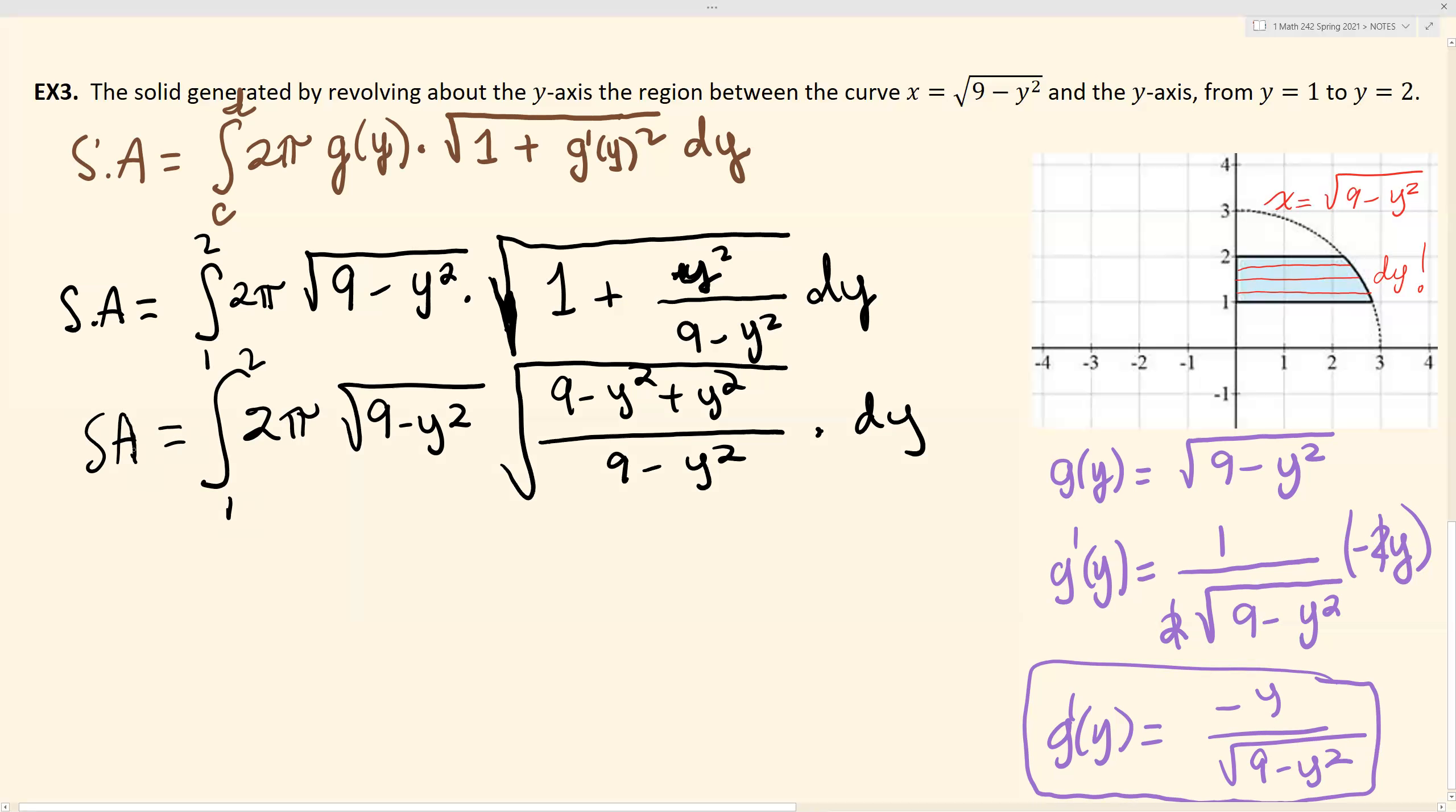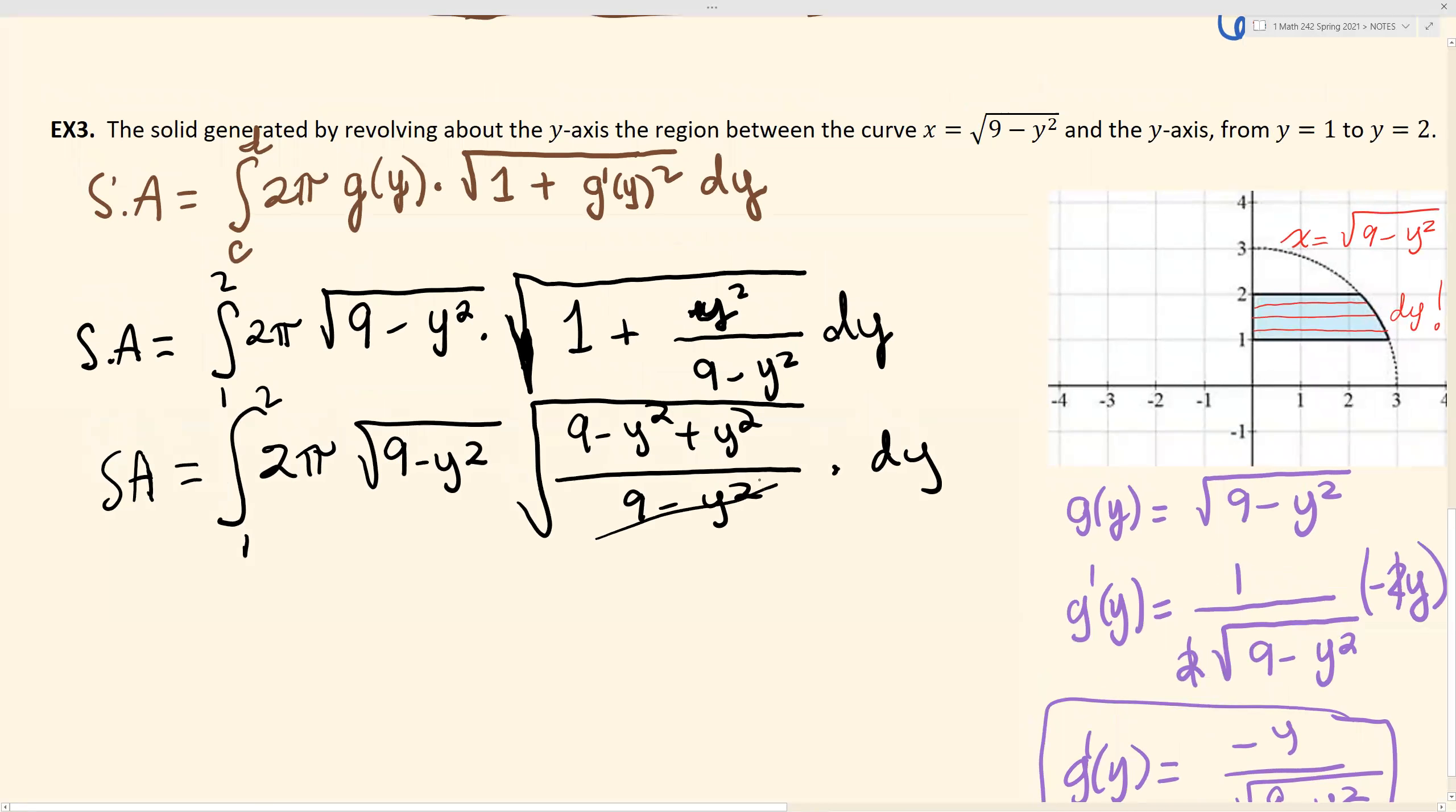So let's take a look here. We have square root of 9 minus y squared is going to cancel with that denominator down here, right? Because both of them are inside the square root. So this is going to be gone. Plus y minus y is going to be gone. I'm left with just square root of 9, and square root of 9 is 3. How nice.